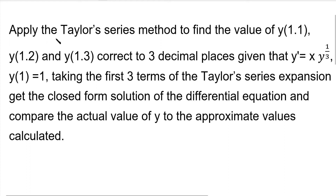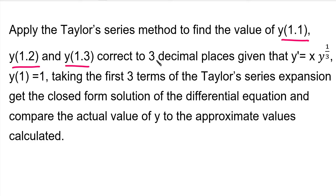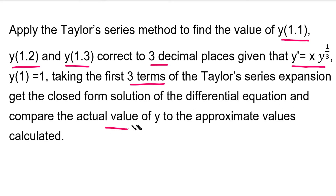Hi students. In this Taylor series problem, we need to apply the Taylor series method to find the value of y(1.1), y(1.2), and y(1.3), correct to three decimal places. Given that y' = x·y^(1/3) and y(1) = 1. Taking the first three terms of the Taylor series expansion, we also find the closed form solution of the differential equation and compare the actual value of y to the approximate value calculated.